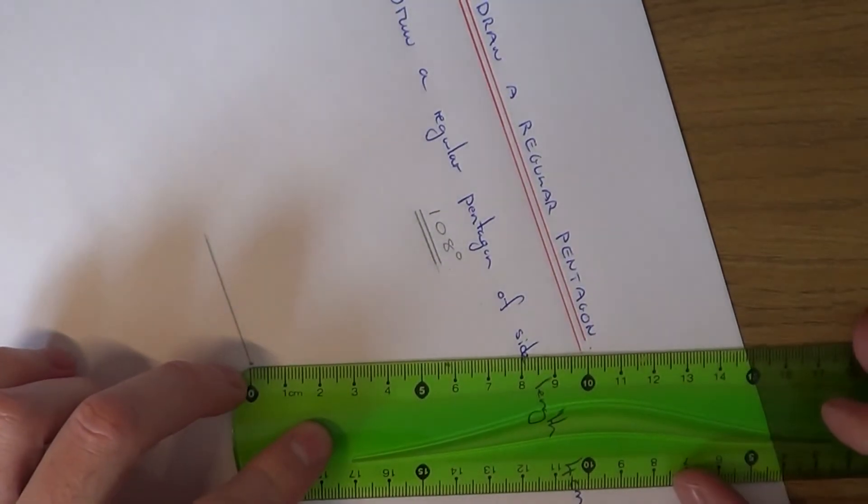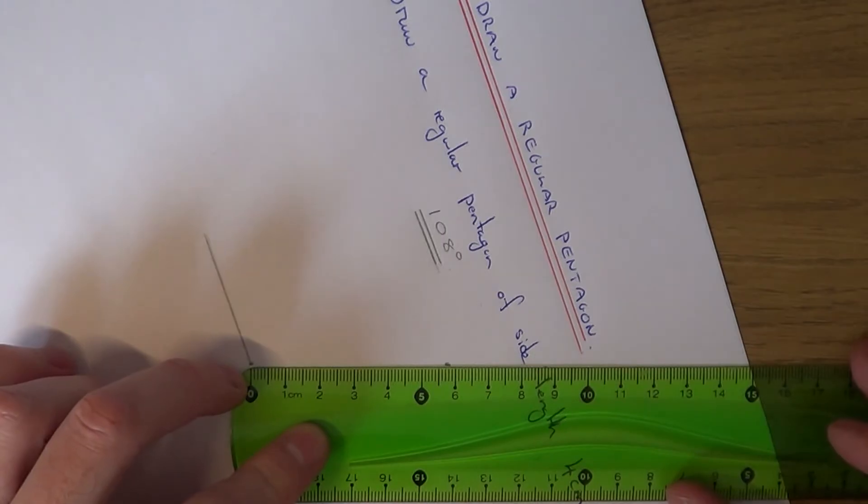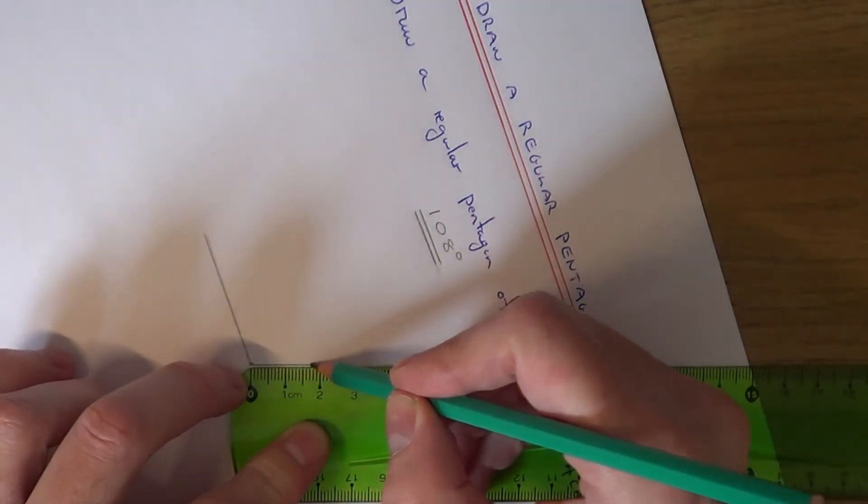So if you get your ruler in line, and just make that four centimetres.